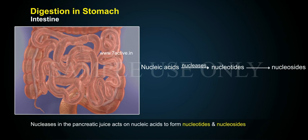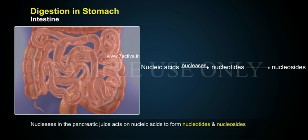Nuclease in the pancreatic juice acts on nucleic acids to form nucleotides and nucleosides. Nucleic acids, acted on by nucleases, yield nucleotides and nucleosides.